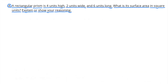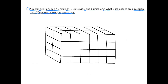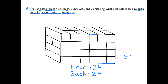Number 4. A rectangular prism is 4 units high, 2 units wide, and 6 units long. What is its surface area in square units? Here I've drawn a rectangular prism with those exact measurements. The front has a surface area of 24 square units, and so does the back.